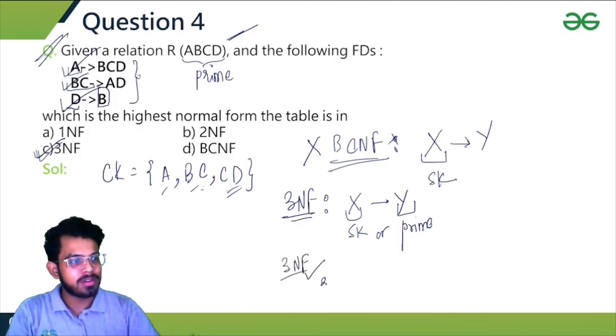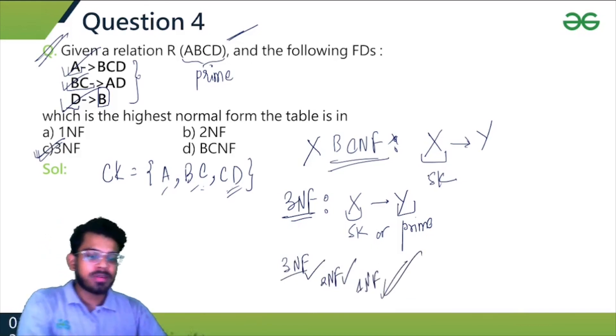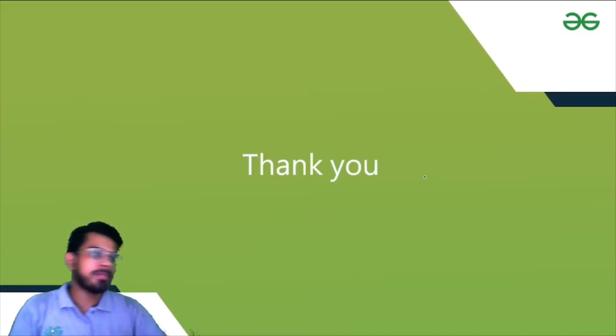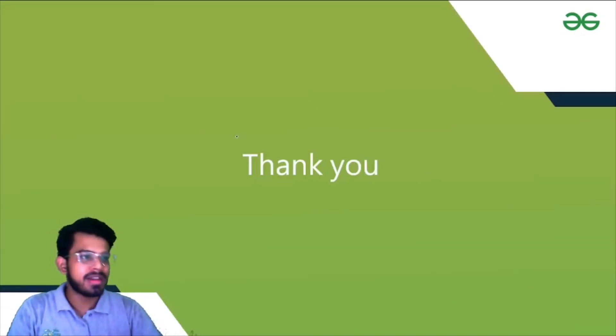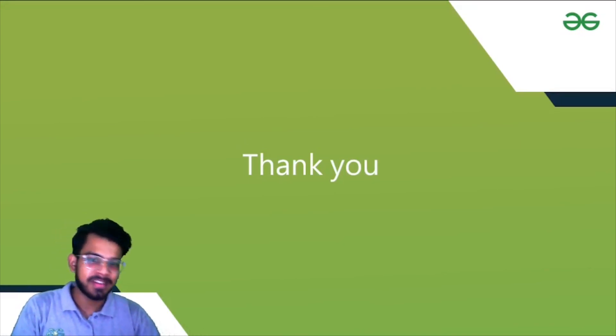Since the relation is in 3NF, it is also in 2NF and 1NF. The highest normal form of this relation is 3NF. That was all for this session — thank you, I hope you learned something from this and we'll meet in the next session.